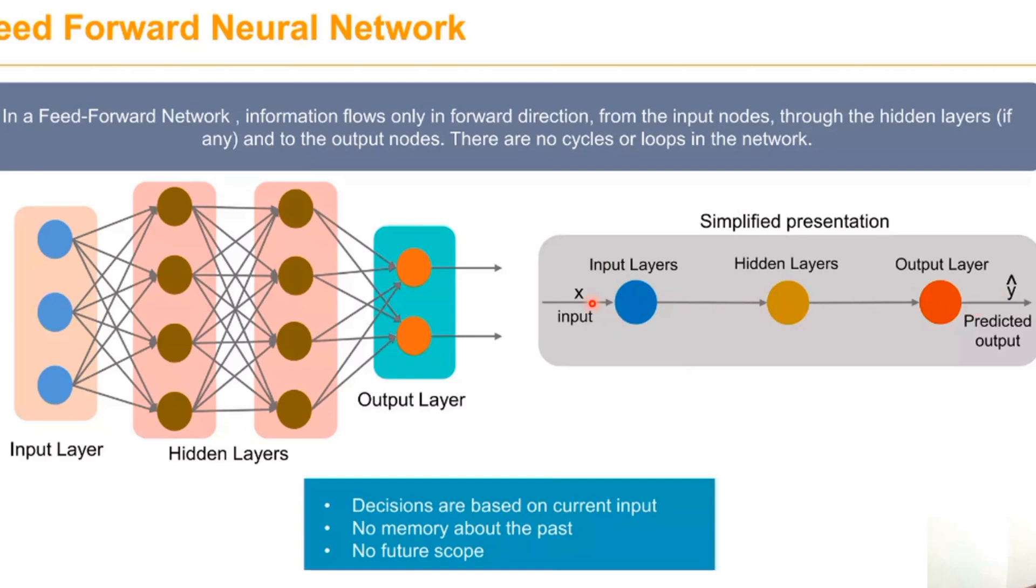This is a simple presentation of the feed-forward network. It has an input layer, hidden layer, and output layer. For the input layer, X is the input and Y-hat represents the predicted output. In this network, it depends only on the current input value.